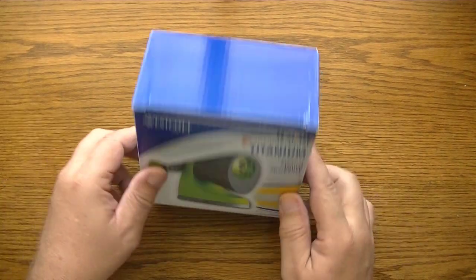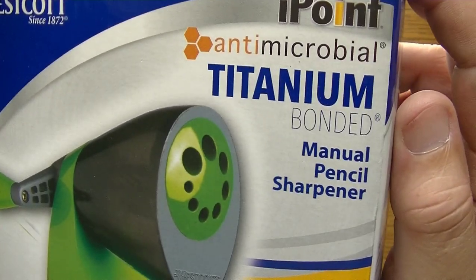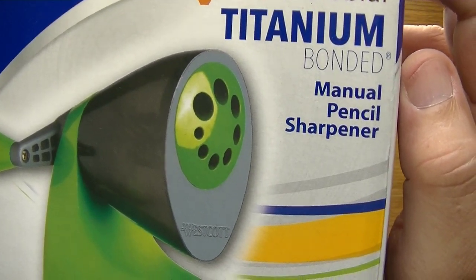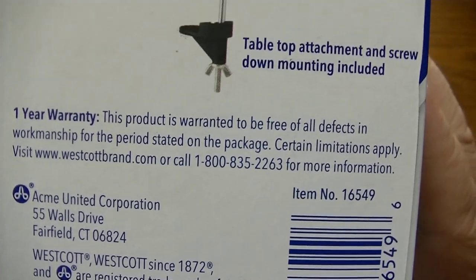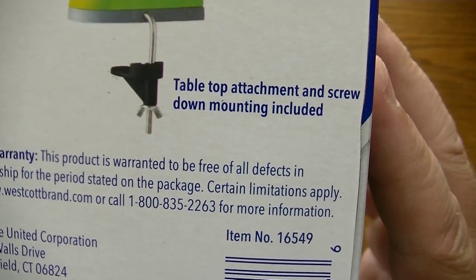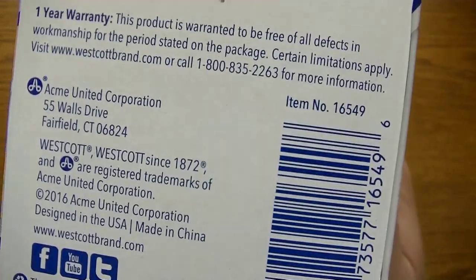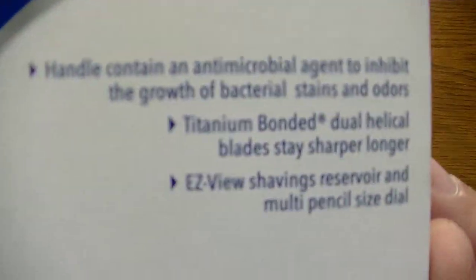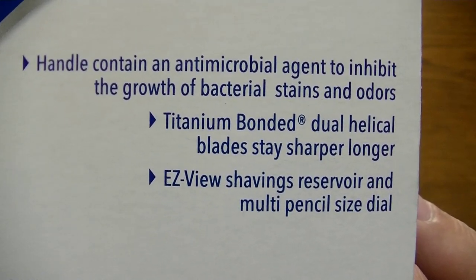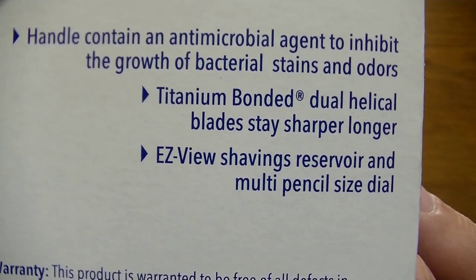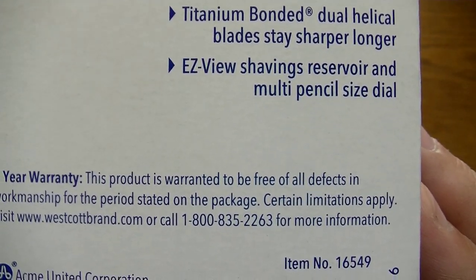Alright, so this is going to be the first time I'm opening up this package, so let's just take a look at it before I do. You can see right here the iPoint Antimicrobial Titanium Bonded Manual Pencil Sharpener. On the side of the box it tells us that it has a one year warranty, has a tabletop attachment and screw down mounting included, which is great. It's made by Westcott since 1872.